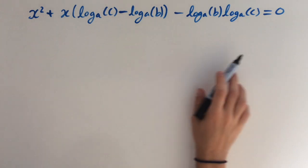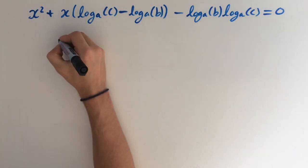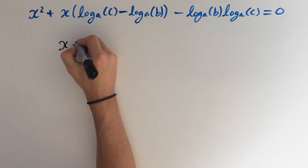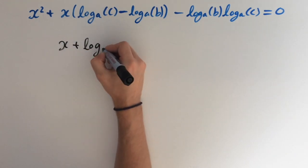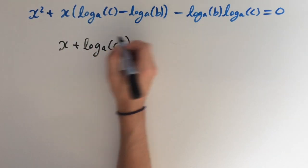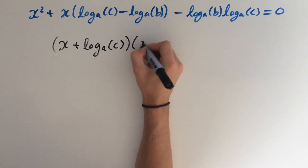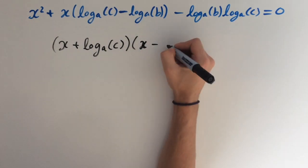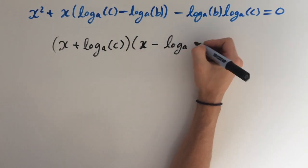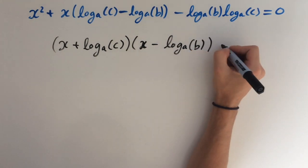Now the trick here is to spot that we can factorize this equation. This is going to factorize as x plus log base a of c times x minus log base a of b, and this equals 0.